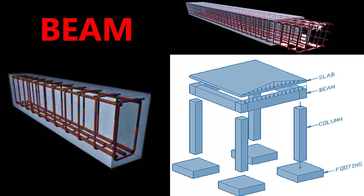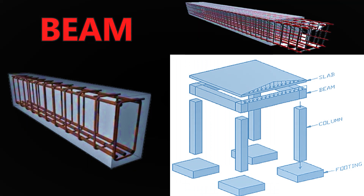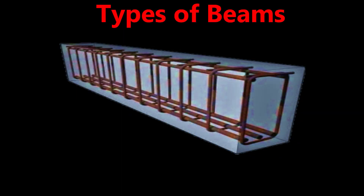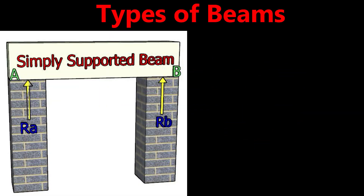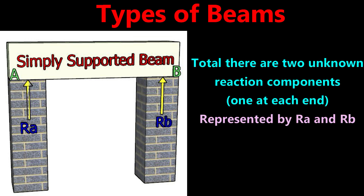The first type is the simply supported beam. If both ends of the beam rest freely on a simply supporting column or wall, then it is called a simply supported beam. It is one of the simplest structural elements. In a simple support, only one reaction force acts, always normal to the support.